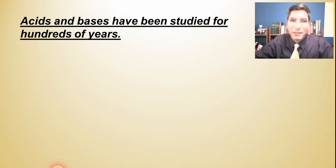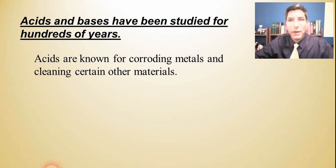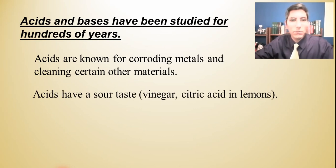When we talk about acids and bases, these are compounds that have been studied for hundreds, if not even thousands of years. For example, acids have been known for corroding metals and for being used to clean certain other types of materials. You may have heard that if you take Coca-Cola, there's phosphoric acid in it, and it is able to clean off the corrosion found on car battery terminals. Acids, if you drink things that have acids in them like fruit juice or lemon juice, you'll find that they have a sour taste to them. Vinegar is also an example of that.